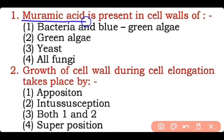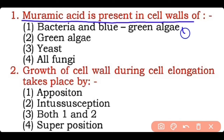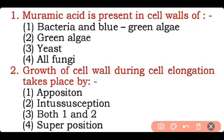Question 1: Neuraminic acid is present in the cell wall of which organisms? Options: bacteria and blue-green algae, green algae, yeast, all fungi. Correct answer is option one — neuraminic acid is present in the cell wall of bacteria and blue-green algae.